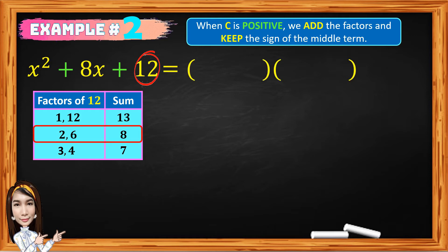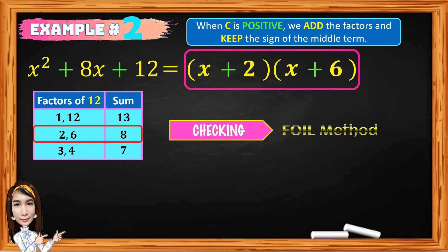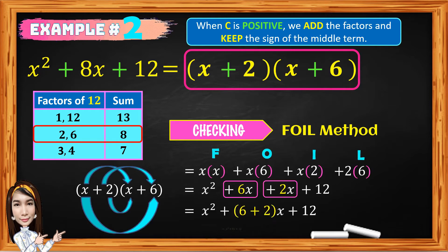The factor of x squared is x times x, and the factors 2 and 6 are both positive. So the factor of x squared plus 8x plus 12 is the quantity x plus 2 times the quantity x plus 6. To check if your factor is correct, we can use the FOIL method. Given the quantity x plus 2 times the quantity x plus 6, the product is x squared plus 8x plus 12. And you got it correct.